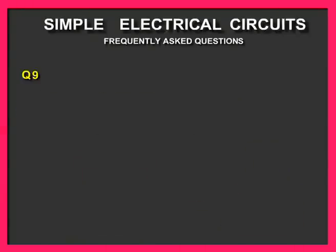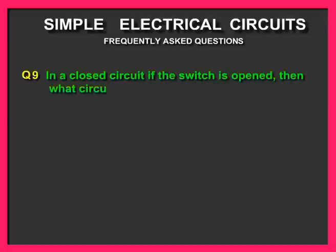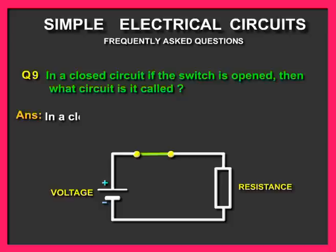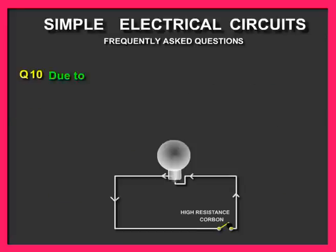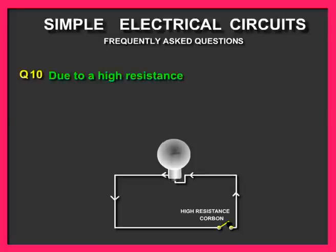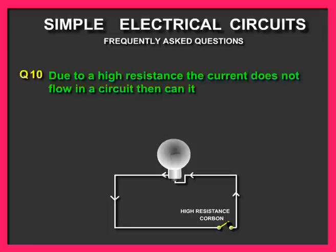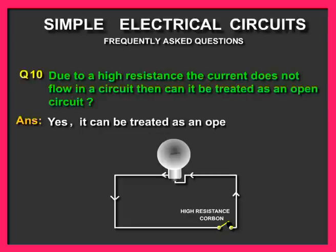Question number nine: In a closed circuit, if the switch is opened, then what circuit is it called? Question number ten: Due to high resistance, the current does not flow in a circuit — can it be treated as an open circuit? Answer: Yes, it can be treated as an open circuit.